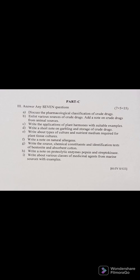Part C Question 8: Write a note on the proteolytic enzymes pepsin and streptokinase. First of all, the source is very important — compulsorily write which animal it is obtained from, like ox, sheep, pig — or the scientific name such as Bos taurus. Write their scientific names, uses, how it is processed, and how it is extracted from the animal body, in a proper way.